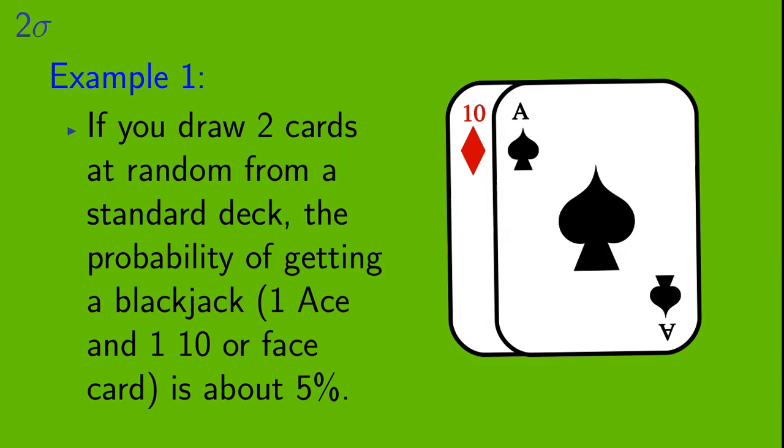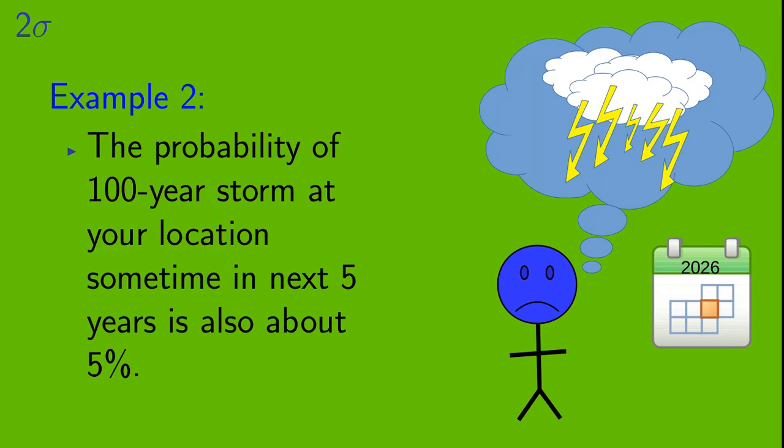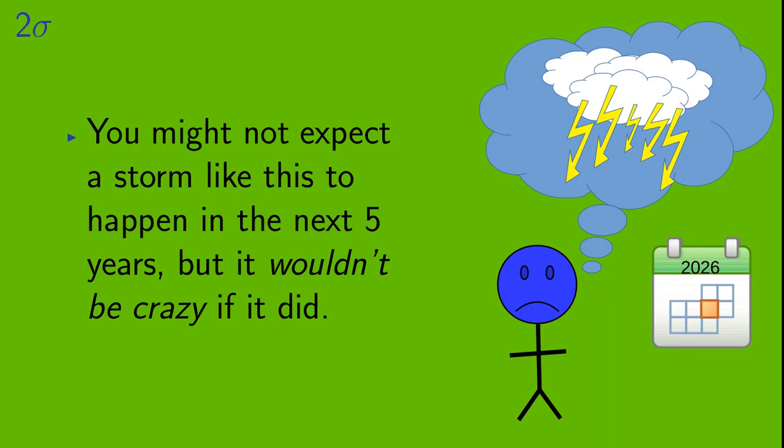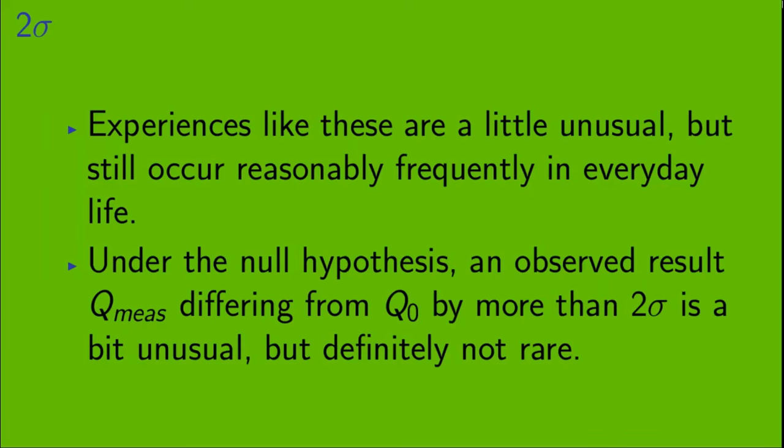Example 1. If you draw two cards at random from a standard deck, the probability of getting a blackjack, so that's one ace and one 10 or face card, is about 5%. Example 2. The probability of a 100-year storm at your location, sometime in the next five years, is also about 5%. Now, you might not expect a storm like this to happen in the next five years, but it wouldn't be crazy if it did. Now, experiences like this are a little unusual, but they still occur reasonably frequently in everyday life. Under the null hypothesis, an observed result Q measured differing from Q0 by more than two sigma is a bit unusual, but definitely not rare.